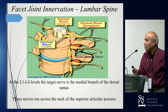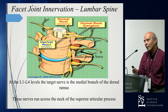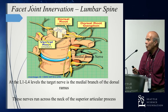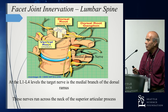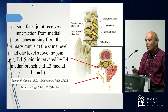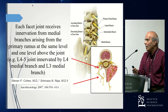Regarding the innervation of the facet joint at the lumbar spine level between L1 and L4, the facet joints are innervated by the medial branch of the primary dorsal ramus of each spinal nerve. Usually these medial branch nerves run across the neck of the superior articular process, as you can see from the arrow on that image. Usually each facet joint is innervated by two medial branches — one at the same level of the primary dorsal ramus and the other one at the level immediately above.